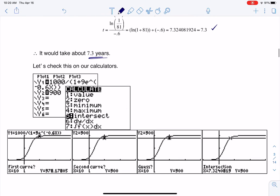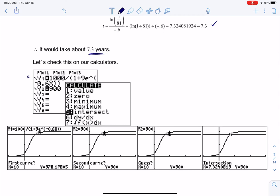so I went and plugged in my logistic model to y1 and 900 to y2. Keep in mind I had to adjust my window on my calculator. I think I set my y max probably to 1000.